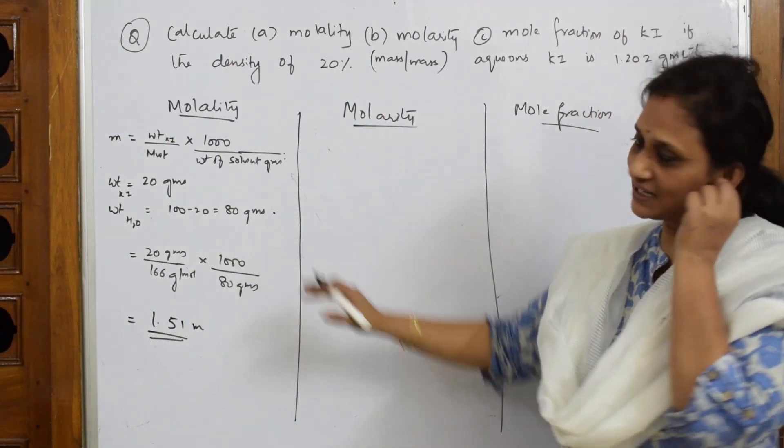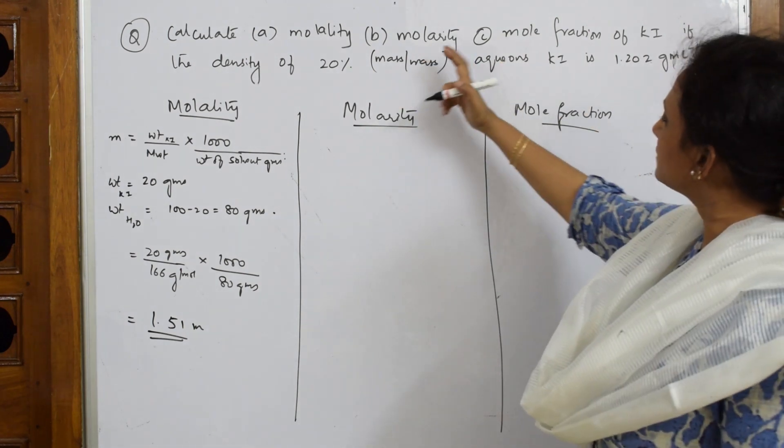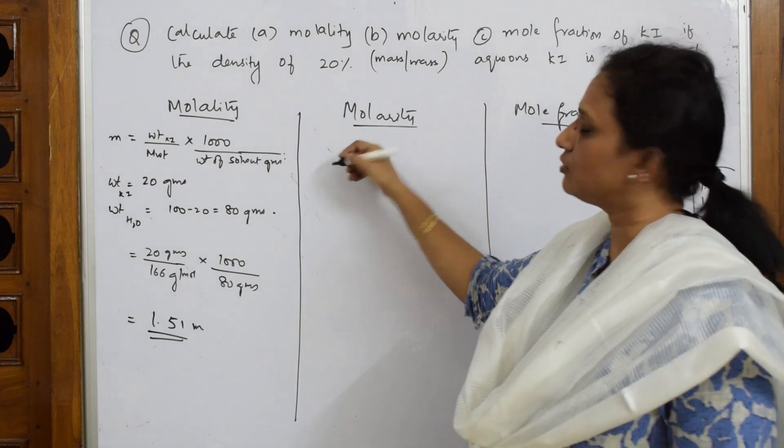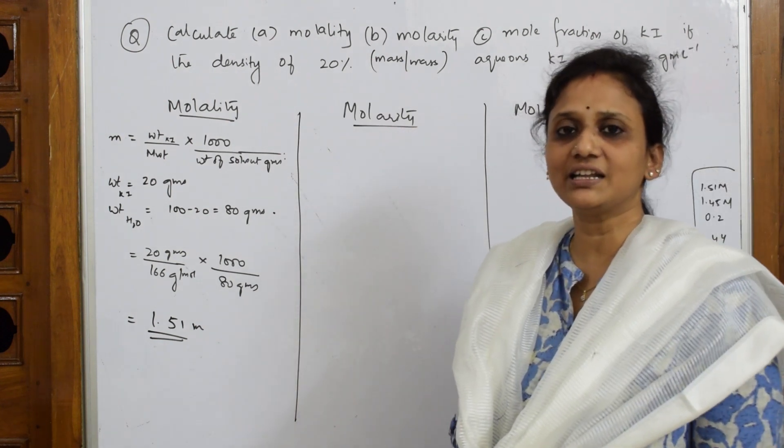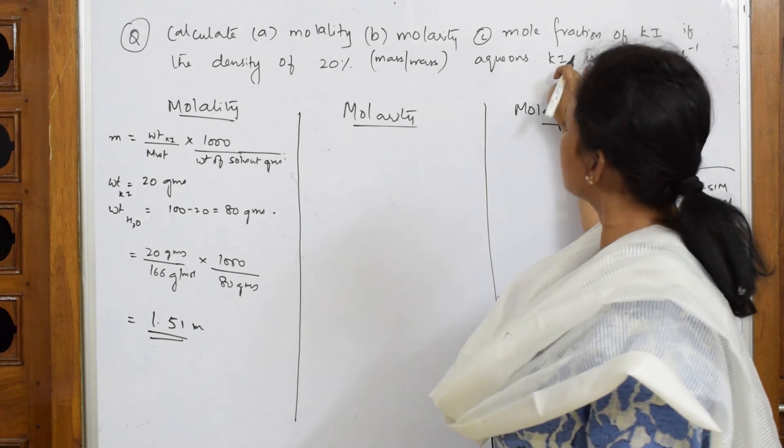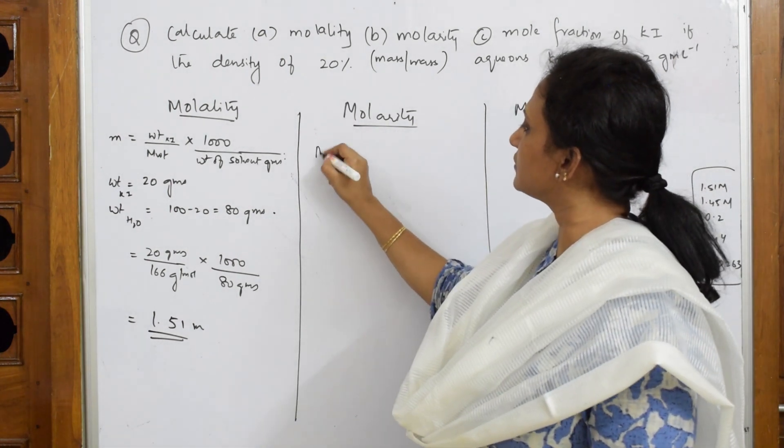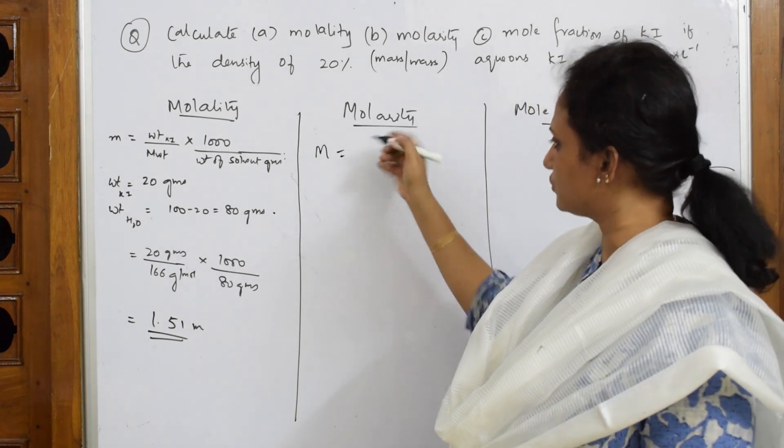It's easy, directly substitution. Now, problem starts when you're calculating molarity. Why? Because here, to calculate molarity, we can't directly write because density is given as well as percentage is given. I can use this formula when this condition is given to you directly. Use this formula, it's easy.